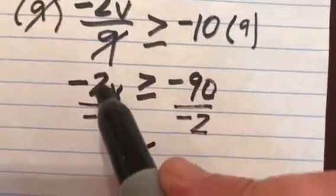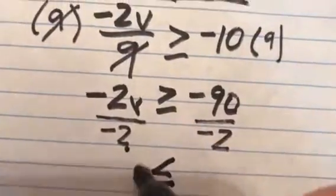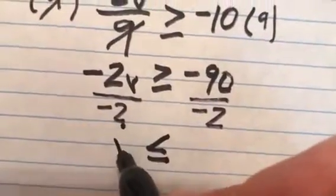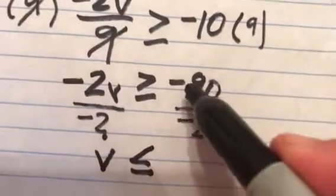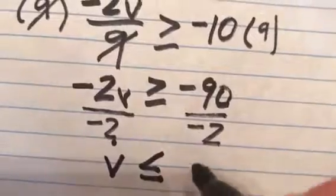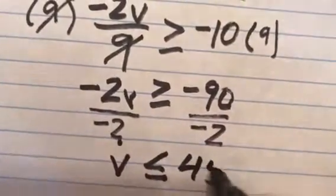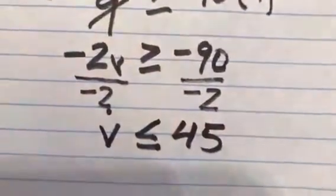And then the negative 2 divided by negative 2 cancels out. It makes a 1. And so I have 1v, or just v, is less than or equal to. A negative divided by a negative is a positive. So positive 45. And so my final answer is v is less than or equal to 45.